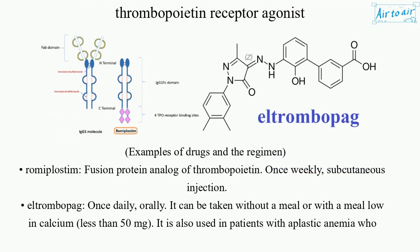Examples of drugs and their regimens: Romiplostim is a fusion protein analog of thrombopoietin, given once weekly as a subcutaneous injection. Eltrombopag is given once daily, orally.